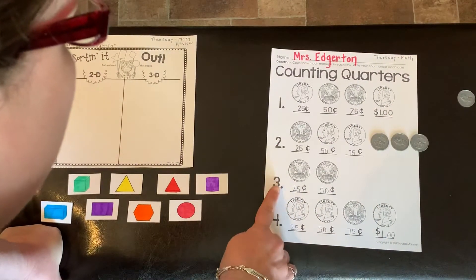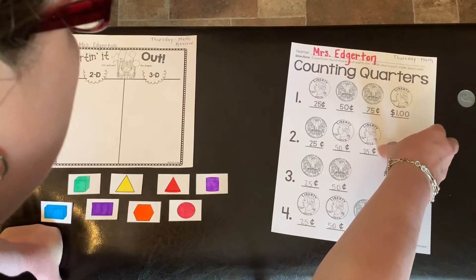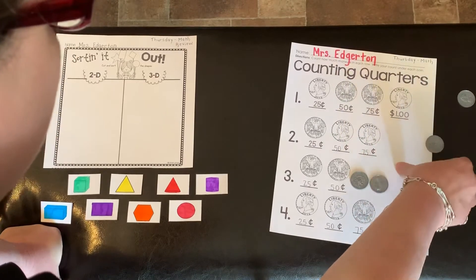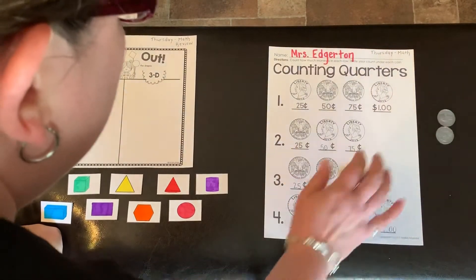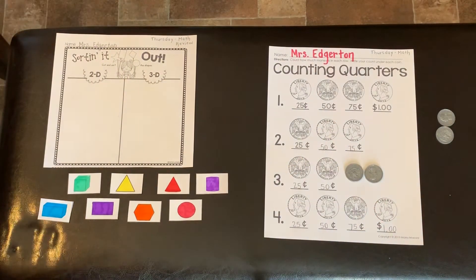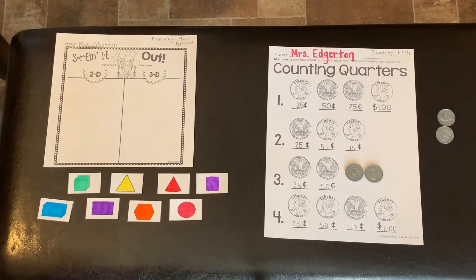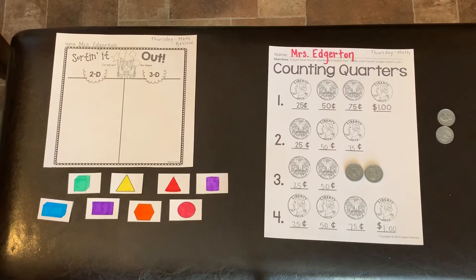And on number three, 25, 50 — I would need two quarters to make 50 cents. Now here's the challenge: if I needed 50 cents and I didn't have quarters, but I had dimes, how many dimes would it take to make that 50 cents? Excellent — it would take five, because I would count by tens: 10, 20, 30, 40, 50. It would take five dimes, but only two quarters.